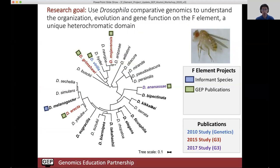In the past, we have used Drosophila comparative genomics to try to understand the organization and evolution of the F element, because it has a series of very interesting characteristics — a combination of mostly heterochromatic characteristics, and also exhibits some euchromatic characteristics in terms of gene density. The first paper we looked at is Drosophila viridis, and then we expanded that to look at three additional species: Drosophila erecta, grimshawi, and mojavensis, and then a more recent paper looking at Drosophila ananassae.